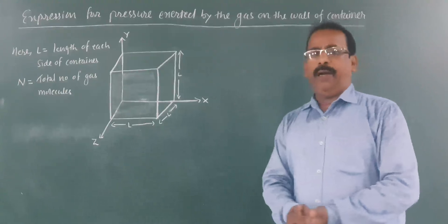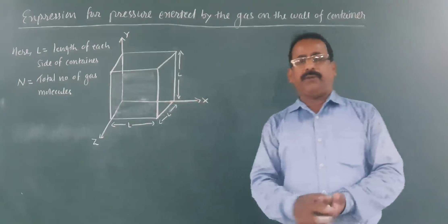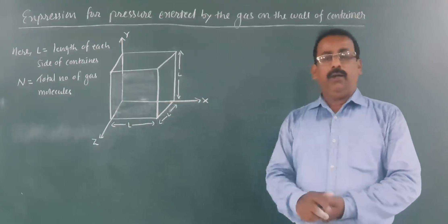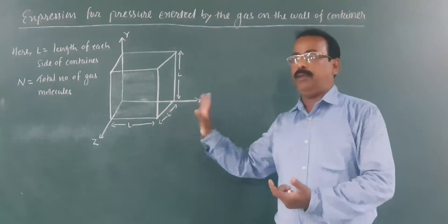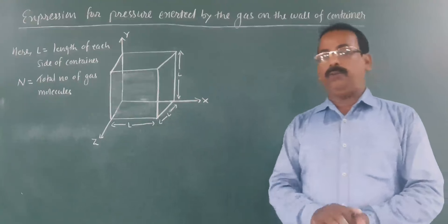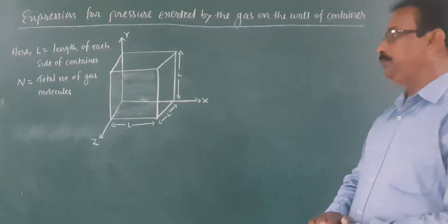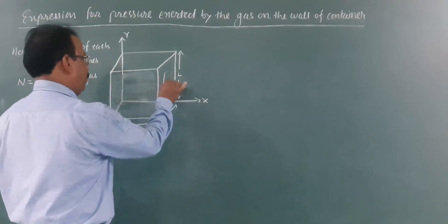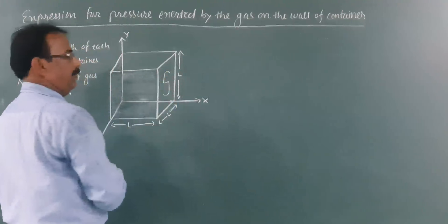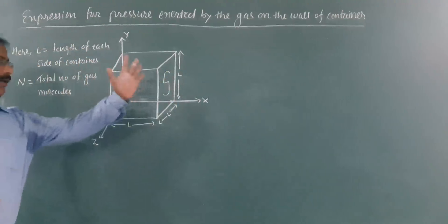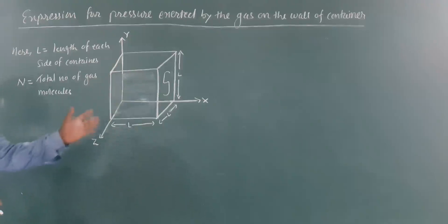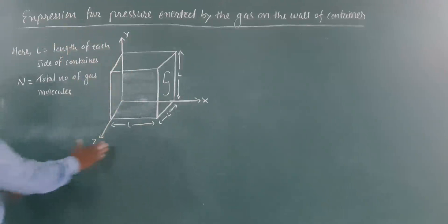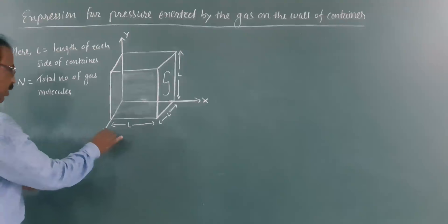Also assume that the molecules of the gas do not collide with one another — they collide only with the walls of the container. We will find the pressure exerted by this gas on one particular wall S.